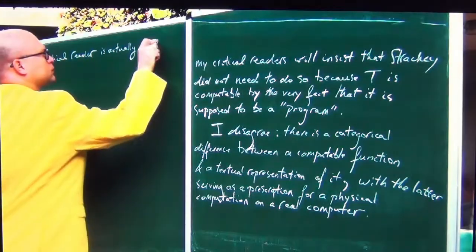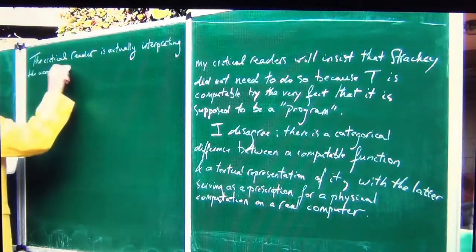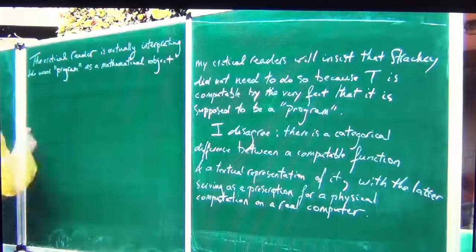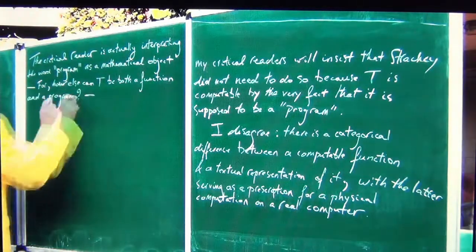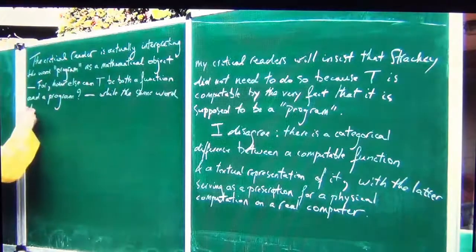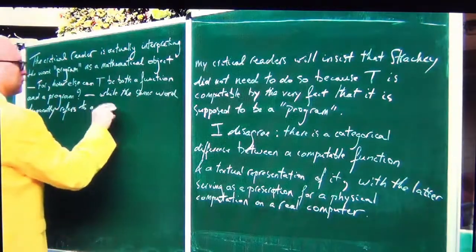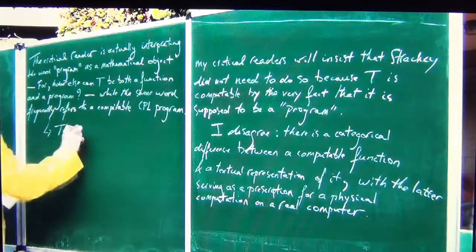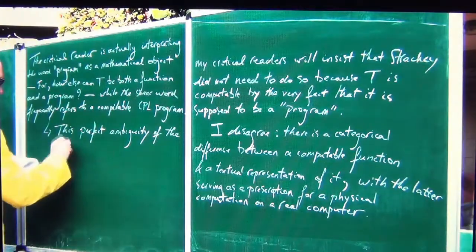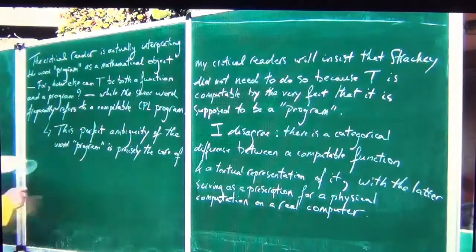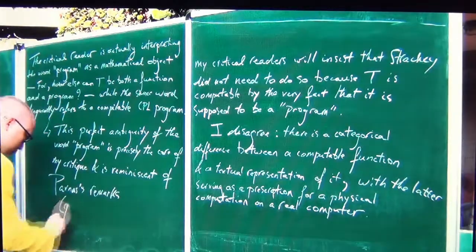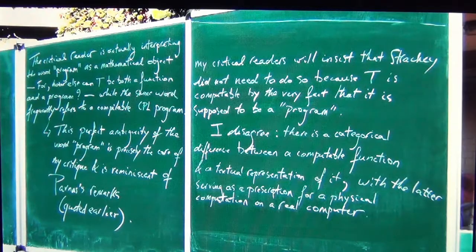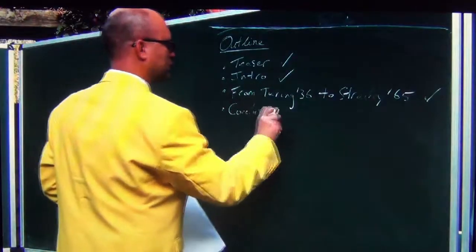The critical reader is actually interpreting the word 'program' as a mathematical object — for how else can T be both a function and a program — while the same word 'program' frequently refers to a compilable CPL program. This perfect ambiguity of the word 'program' is precisely the core of my entire critique and is reminiscent of Parnas's remarks which I quoted earlier. So I have critical readers making the conflations that I'm precisely protesting about.